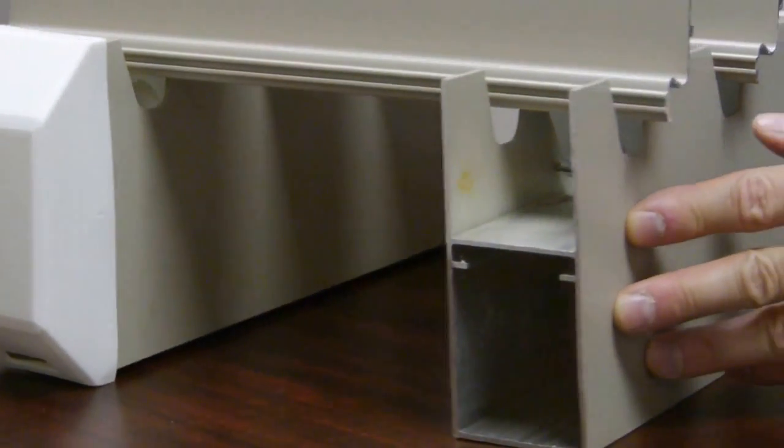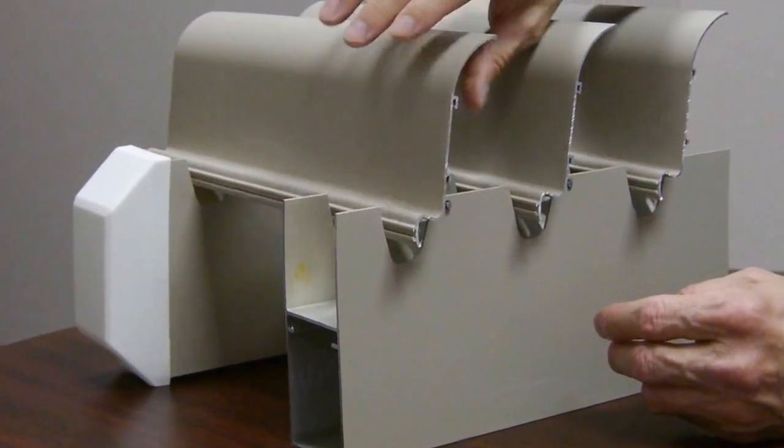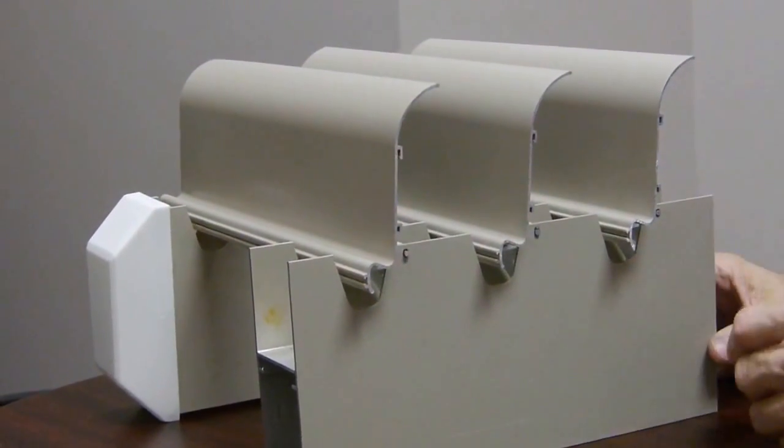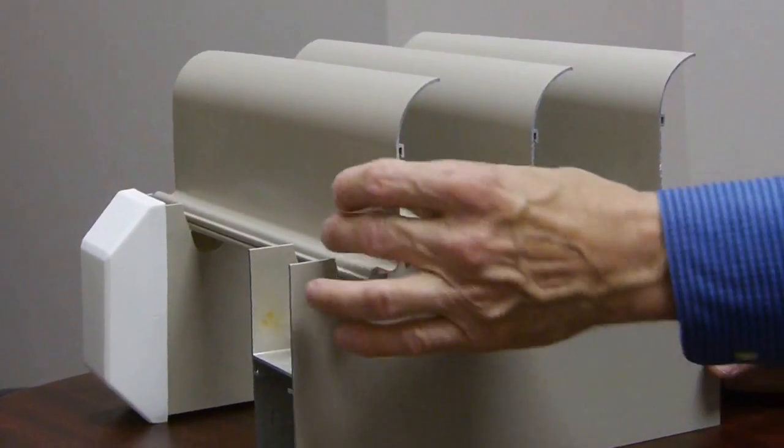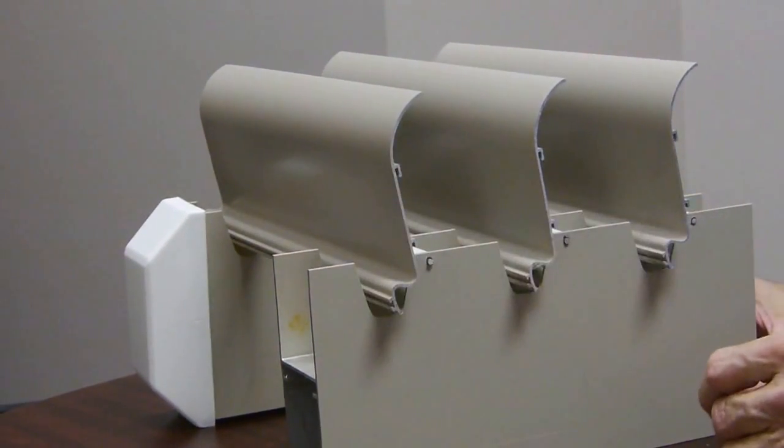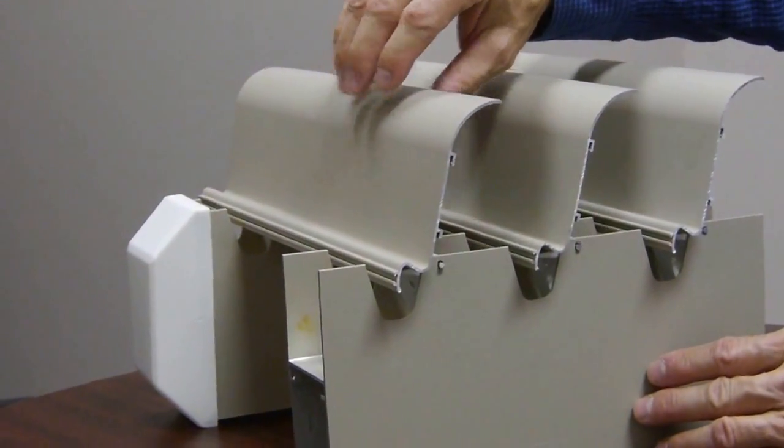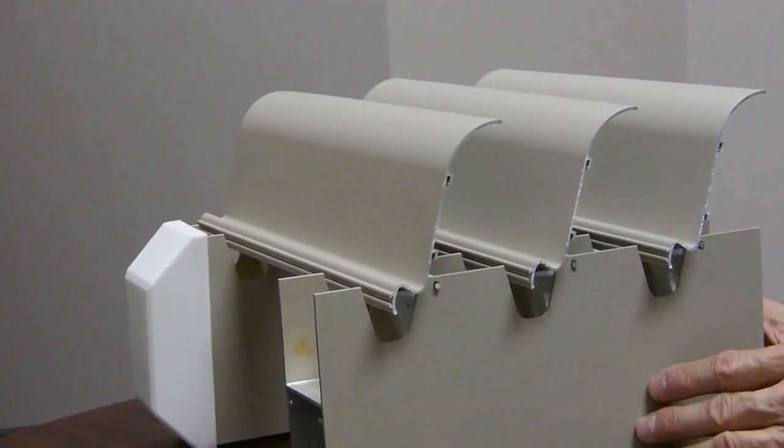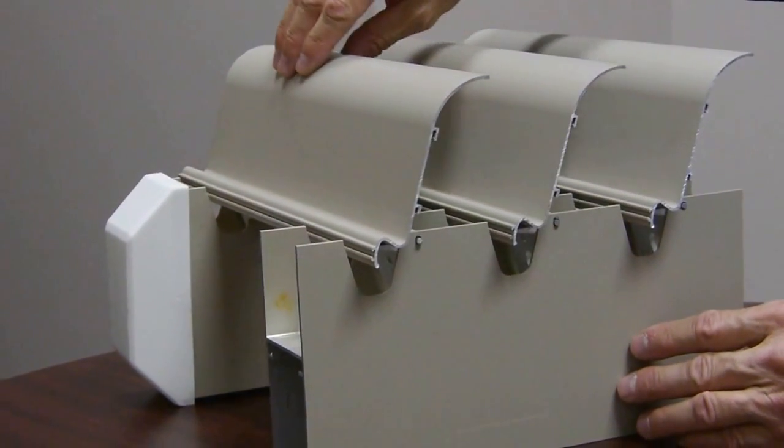Once the rafters are all up, the next step is to place the louvers into the finger-like brackets at each location. Each louver is then placed individually and snapped in. It's a snap mechanical fit, so no screws or tools are required. It's just a matter of getting individual louvers up on top and having several crew members snap them in place.